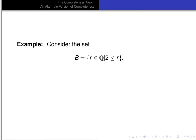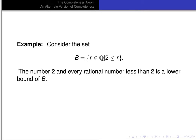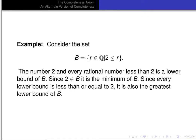Now let's look at set B: all rationals r such that 2 is less than or equal to r — all rationals greater than or equal to 2. Again, 2 and every rational less than 2 is a lower bound of B. But now 2 is in the set B, so it is also the minimum of B. And since every lower bound of B is less than or equal to 2, it is the greatest lower bound of B as well. So the greatest lower bound may or may not be the minimum of the set.